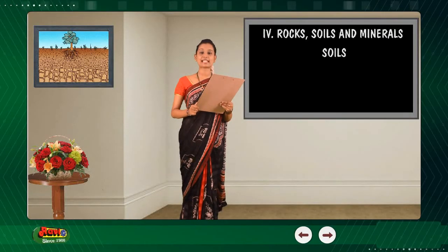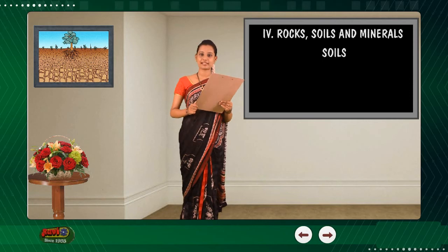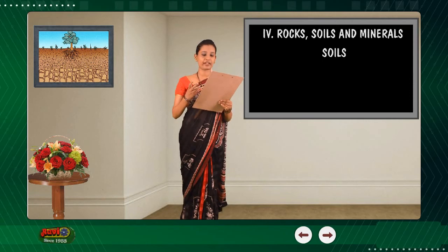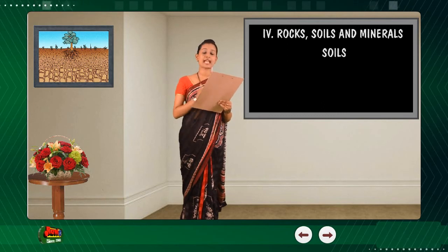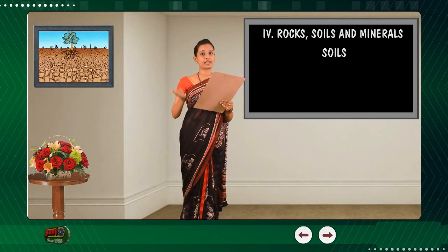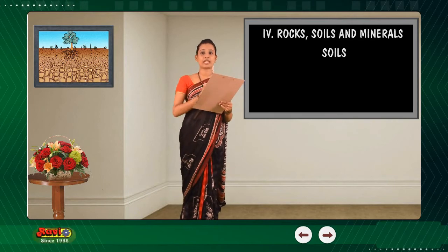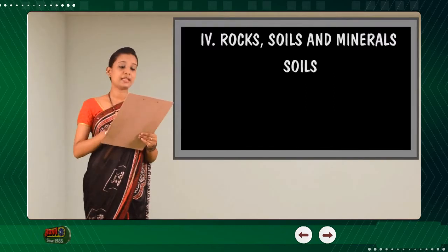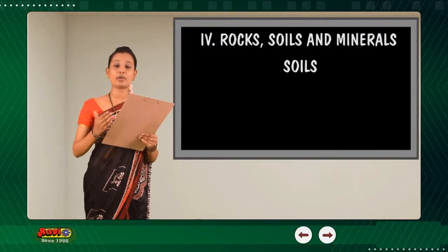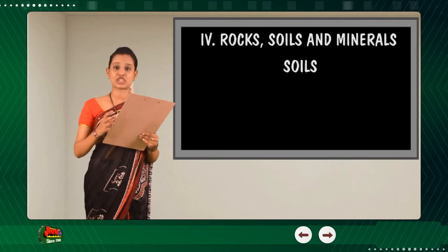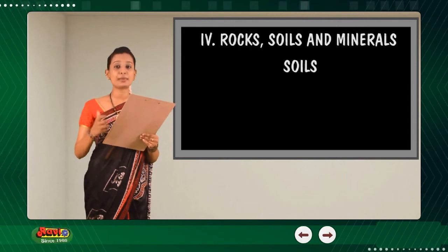Rocks, Soils and Minerals. A rock is a naturally occurring solid aggregate of one or more minerals. Rocks have been used by mankind throughout history. From the Stone Age, rocks have been used for tools. The minerals and metals found in rocks have been essential to human civilization.